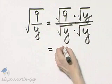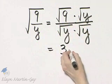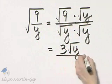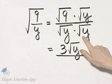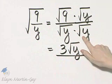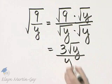The square root of 9 is 3, and then I have square root of y in the numerator. In the denominator, the square root of y times the square root of y is the square root of y squared, which is simply y.